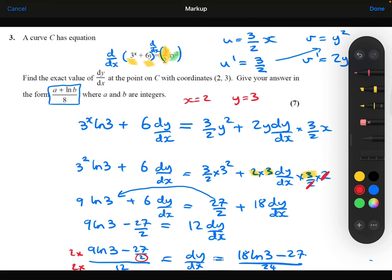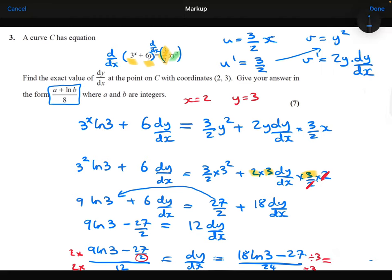Which I could simplify that down a bit because I can divide top and bottom by 3 here. All of these terms divide by 3 nicely. So I'll get (6·ln 3 - 9)/8.